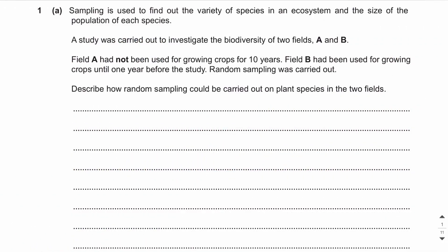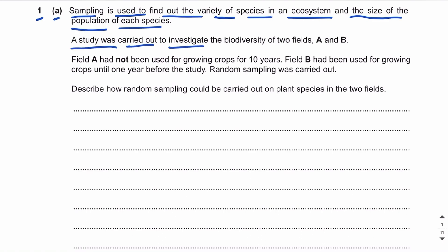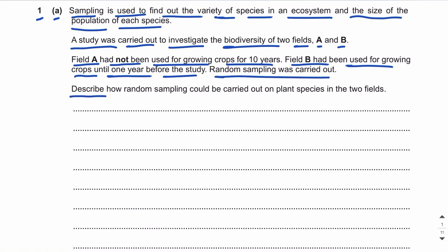Assalamu Alaikum everyone. In this video lecture we will be discussing the topical past papers of biodiversity, which is a chapter of A-level biology 9700. Let's start question number one, part a. Sampling is used to find out the variety of species in an ecosystem and the size of the population of each species. A study was carried out to investigate the biodiversity of two fields, A and B. The question asks us to describe how random sampling could be carried out on plant species in the two fields.